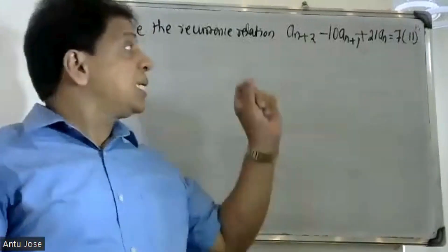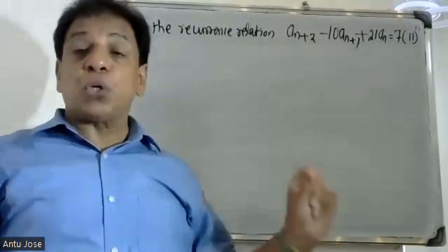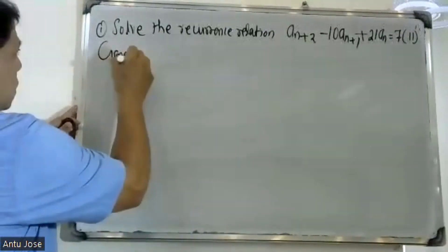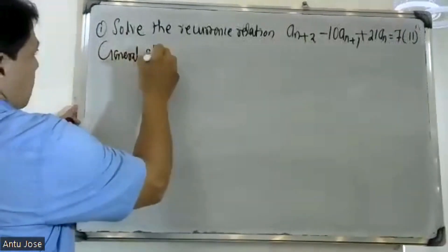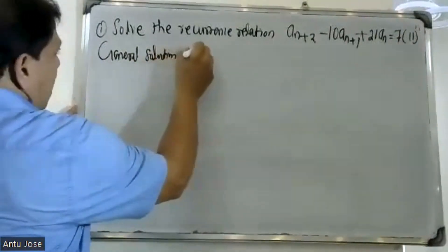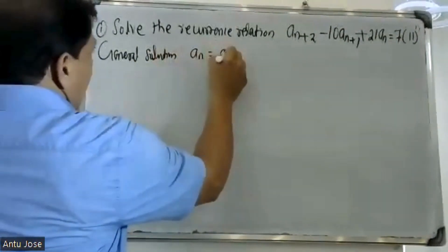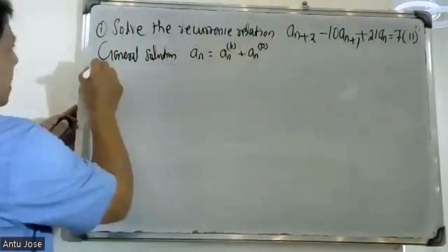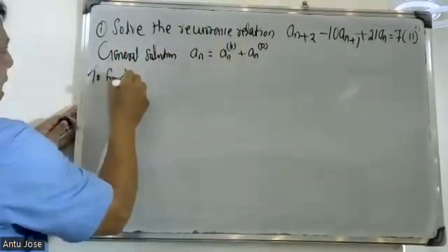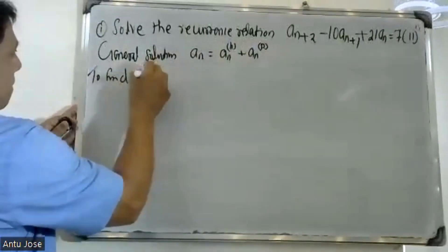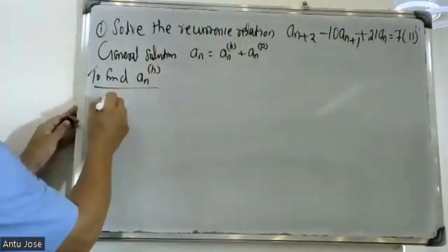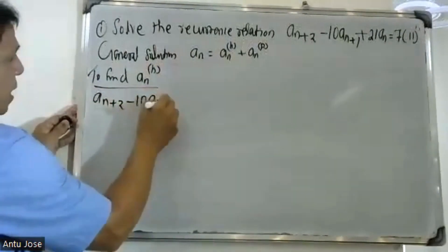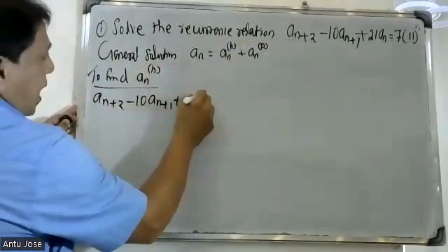Since it is non-homogeneous, the general solution is given by: general solution a(n) = a(n,h) + a(n,p), where a(n,h) is the homogeneous solution and a(n,p) is the particular solution.